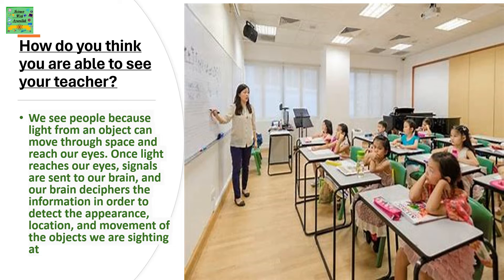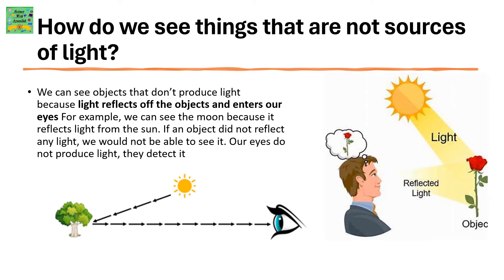How do you think you are able to see your teacher? We see people because light from an object can move through space and reach our eyes. Once light reaches our eyes, signals are sent to our brain, and our brain deciphers the information in order to detect the appearance, location and movement of the object we are looking at. We can see objects that don't produce light because light reflects off the objects and enters our eyes. For example, we can see the moon because it reflects light from the sun. If an object did not reflect any light, we would not be able to see it. Our eyes do not produce light — they detect it.